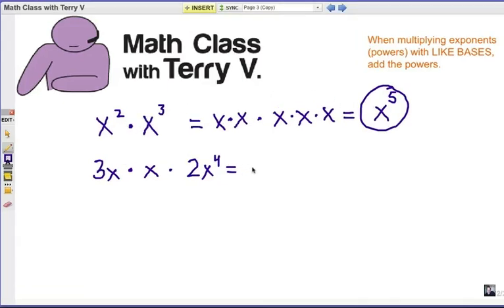Let's look at this next example. We've got three x, which is three times x, and we have multiplication by another x, and then we have multiplication by two x to the fourth, which is two times four x's. Now what we're going to do is just count up what we've got, and we want to make sure that we have the right coefficient and number part. So three times two is six, of course, so we put that in front. And then we count up our x's and there's six of them, so six x to the sixth.